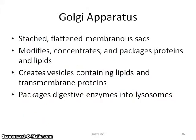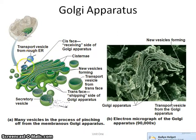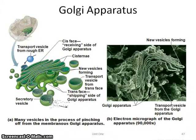Next up is the Golgi apparatus. It modifies, concentrates, and packages proteins. The easiest way to think about this is that it's kind of the UPS system of the cell — it's responsible for packaging things and shipping them out. So if you receive something into the Golgi apparatus, you're going to package it up, concentrate it, and then ship it on out to where it needs to go.